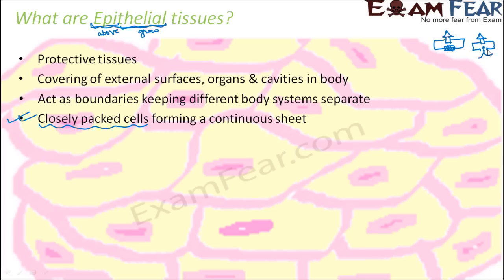If there is leakage, what will happen? Like thieves can enter a house with a leaky boundary — in this case, what will happen if you have a leaky boundary inside your body? There can be many harmful, toxic materials present inside the body which might enter some other organ. For example, the excretory system collects all waste materials and throws them out. If the boundary to the heart is leaky, waste products will start entering the heart and damage it. That is why, to prevent any kind of leakage, epithelial tissues are closely packed cells with very little intercellular space or intercellular material.